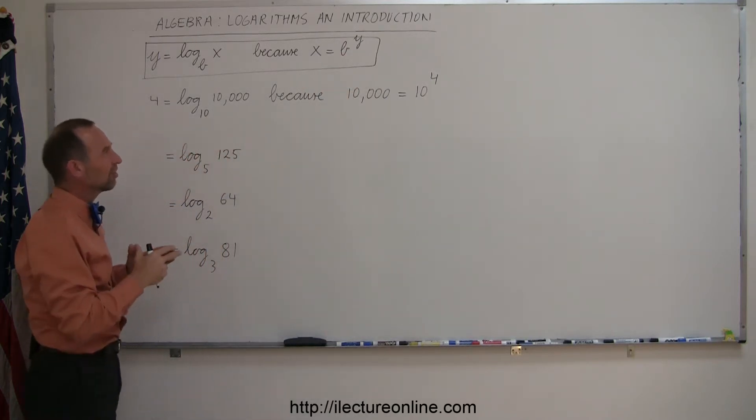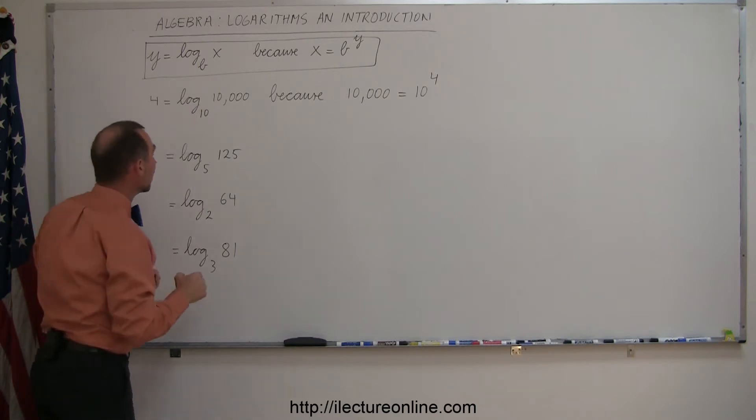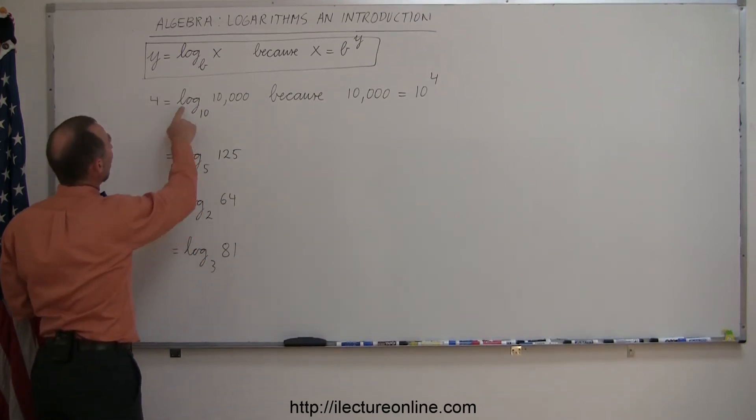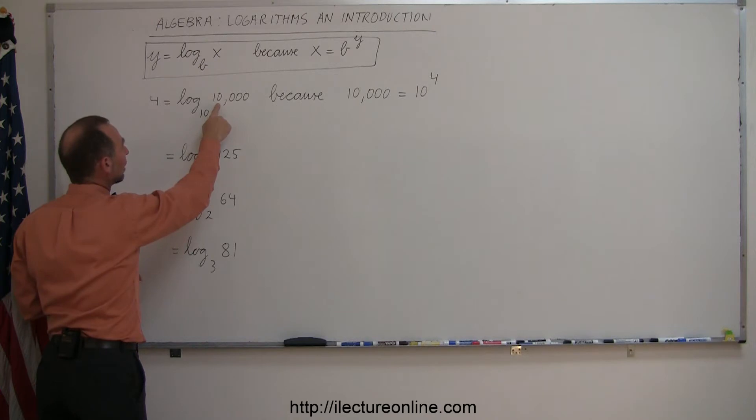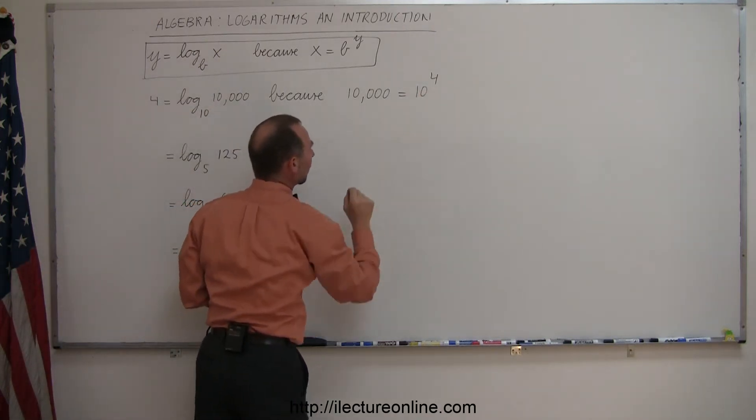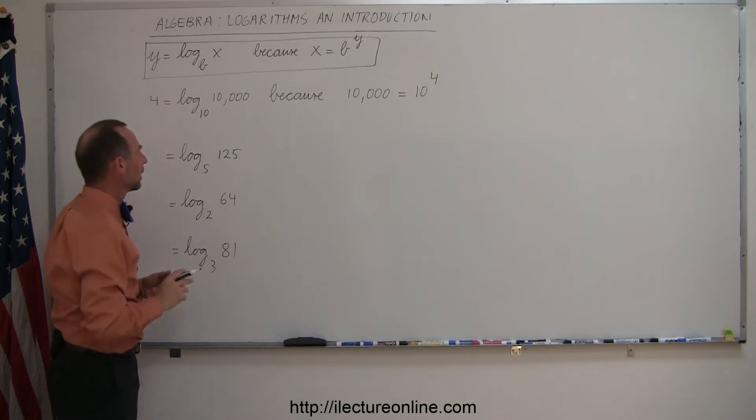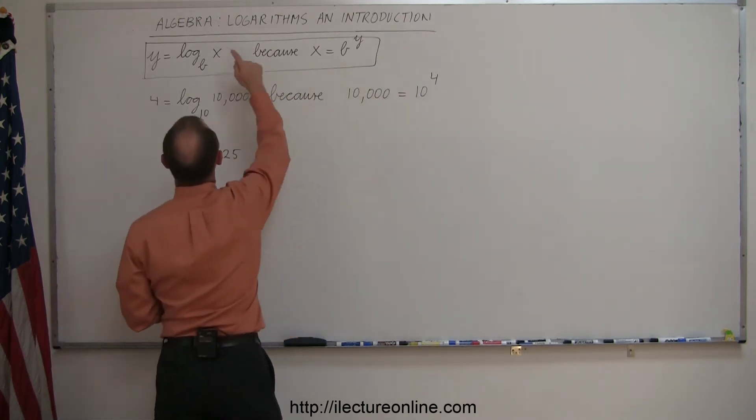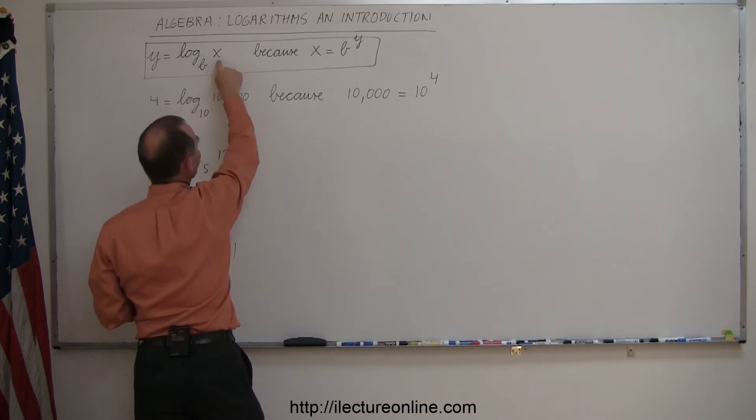Now at first that doesn't seem to mean much, but with an example we can show you what that really means. So let's say that we have the log base 10 of 10,000. That is equal to 4 because 10,000 is equal to 10 to the 4th power. In other words, if you take the base and raise it to y, you should get x back.